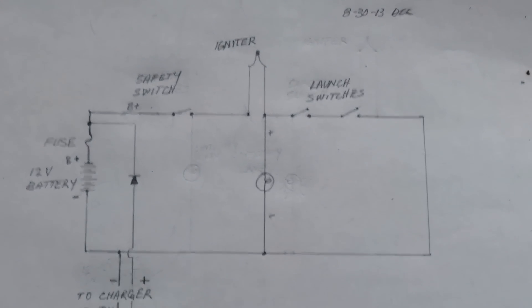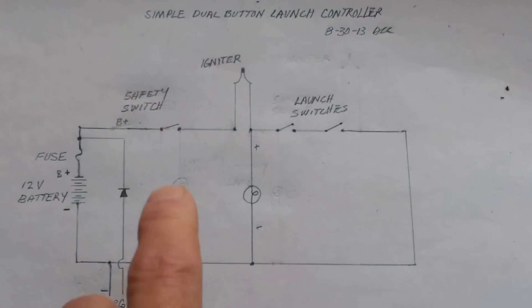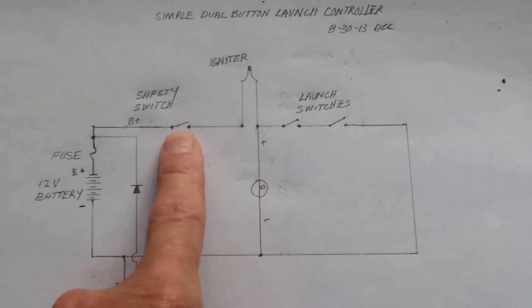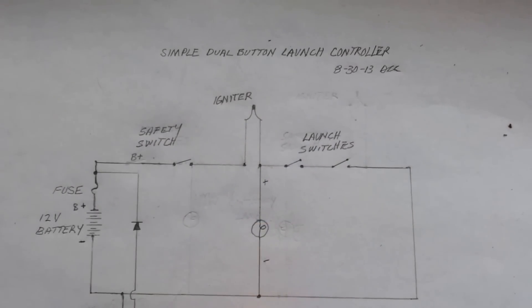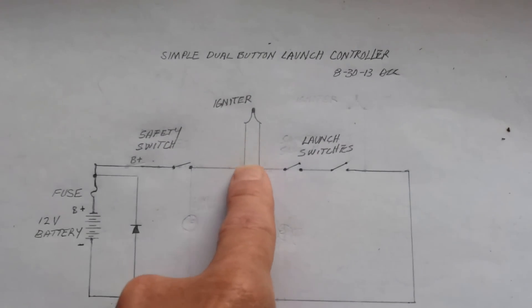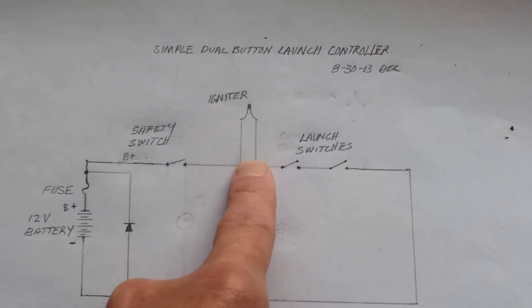This is showing the master switch and the launch switches. This is your continuity light. This is the output to the fuse or igniter.